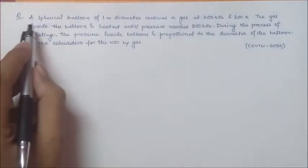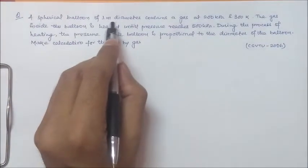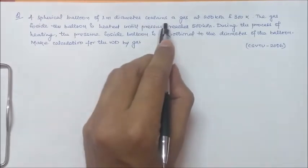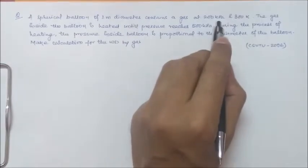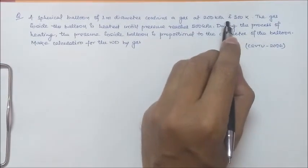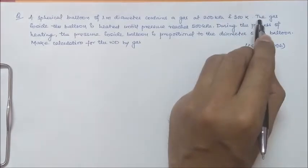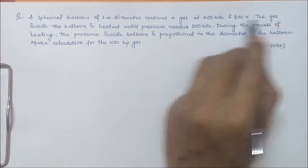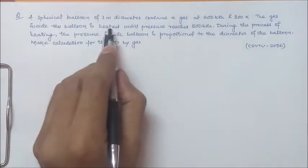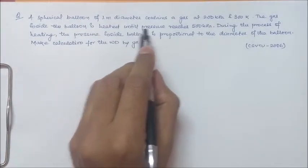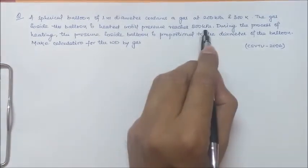The question is like this: A spherical balloon of 1 meter diameter contains a gas at 200 kilopascal and 300 Kelvin. The gas inside the balloon is heated until pressure reaches 500 kilopascal.